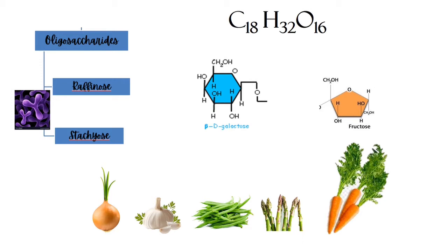They have an empirical formula of C18H32O16, meaning there are 18 carbons, 32 hydrogens, and 16 oxygens. Oligosaccharides are composed of three monomers: galactose, fructose, and glucose to complete the trisaccharides.